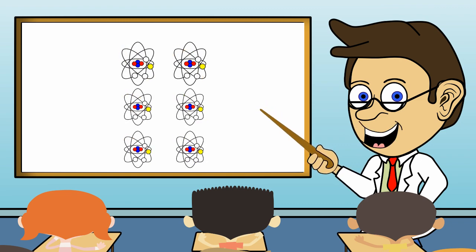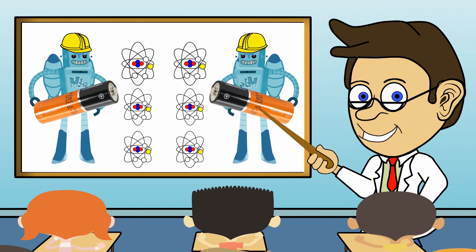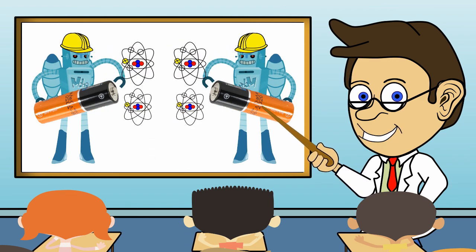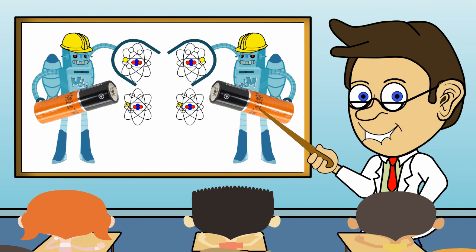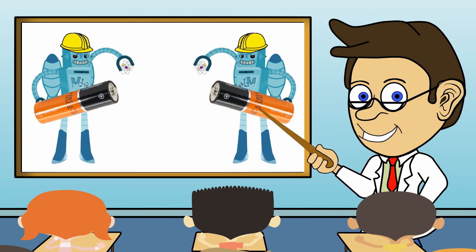We will learn much more about this in later episodes. But for now, we will be using two AA batteries as our energy source. They have electrical energy stored up in them for us to use as power.